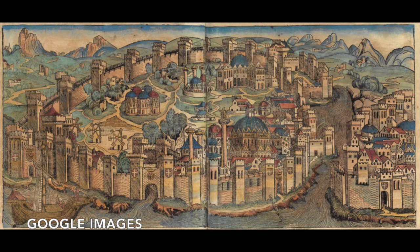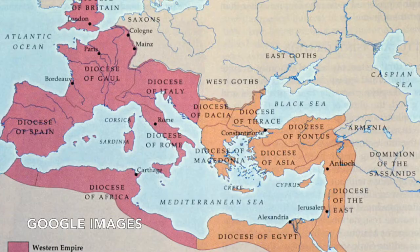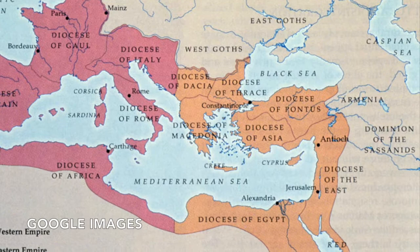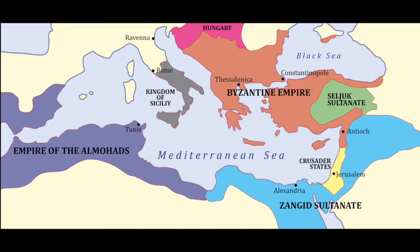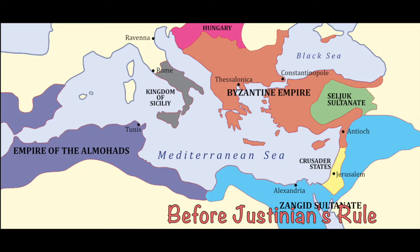Justinian is known as the Byzantine Empire's greatest ruler. Justinian reunited the eastern portion of the Byzantine Empire that had split off, because the Romans believed they could not control the whole empire if it was so large. Justinian's army, led by General Belisarius, sailed into North Africa and then quickly moved into Italy and defeated the Ostrogoths, expanding the Byzantine Empire.